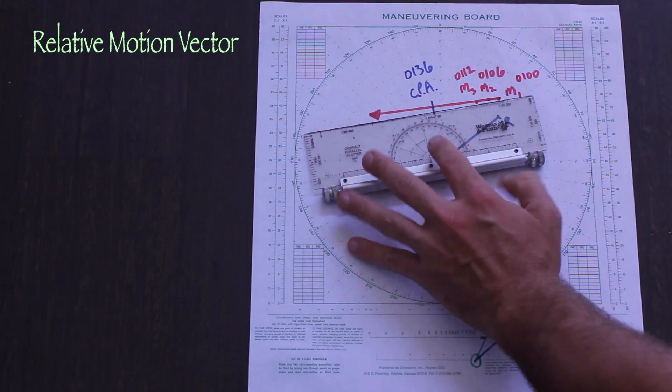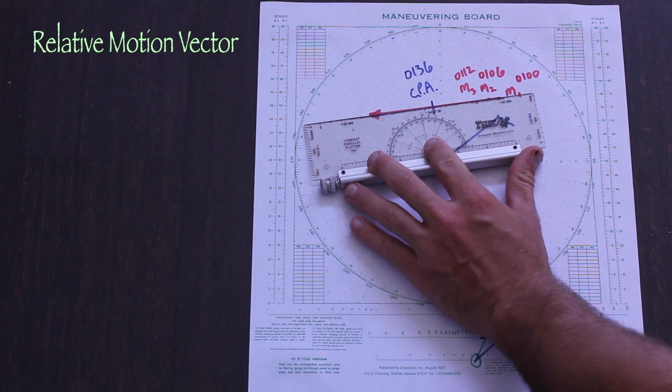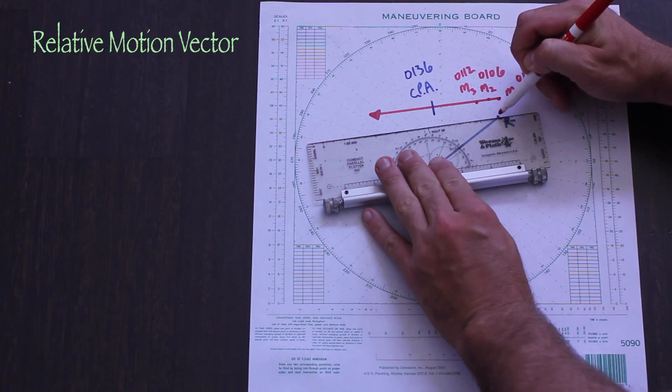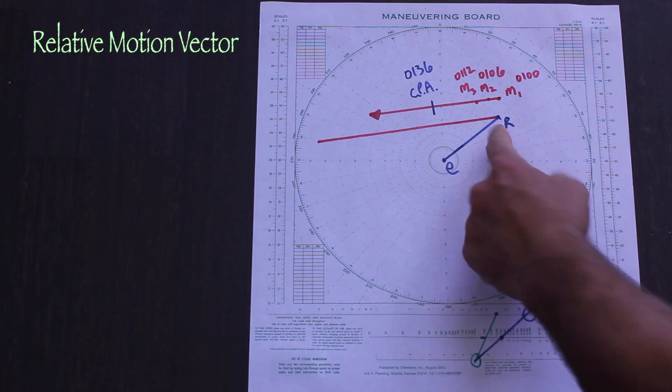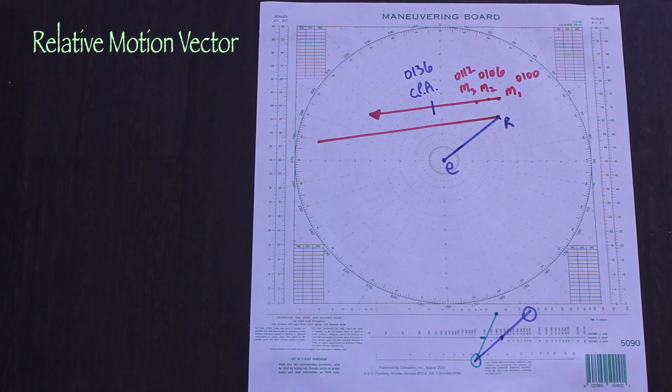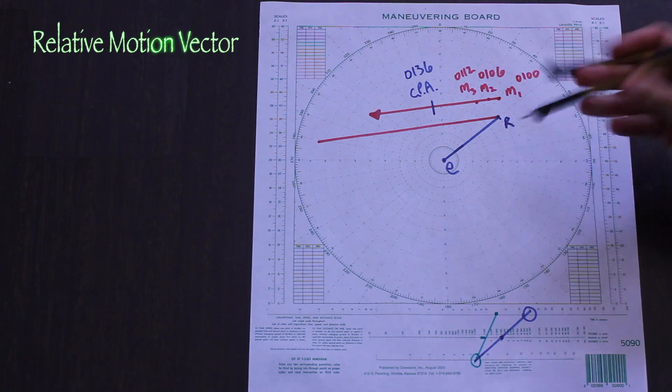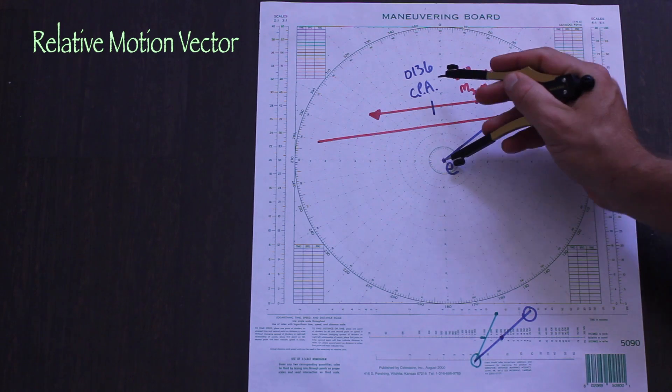Be sure to draw the relative motion vector in the same direction as the relative motion line, from M1 towards M3. A common mistake is to draw the line backwards. How long do we draw it? An equivalent distance to the speed of relative motion line, which we said was 8 knots for this example.